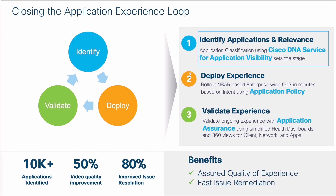The second and third points — app policy and app assurance — have been shipping with DNA Center for a while. What we've added recently is the ability to classify applications end-to-end consistently on the network using the DNAC controller service called Application Visibility Service.